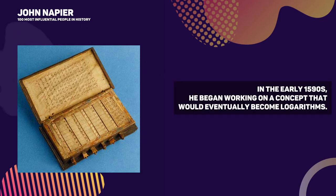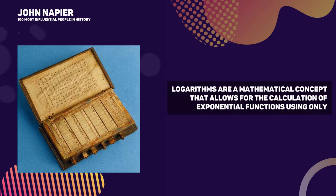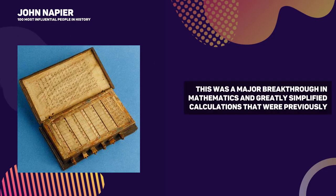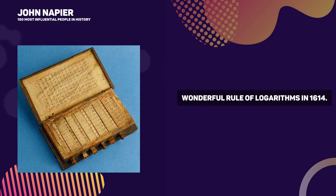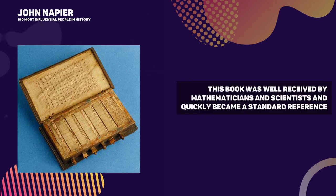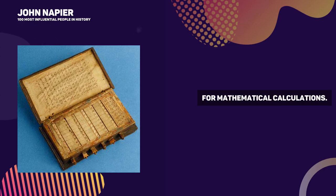In the early 1590s, he began working on a concept that would eventually become logarithms. Logarithms are a mathematical concept that allows for the calculation of exponential functions using only addition and subtraction. This was a major breakthrough in mathematics. Napier published his ideas in a book called Mirifici Logarithmorum Canonis Descriptio, Description of the Wonderful Rule of Logarithms, in 1614, which quickly became a standard reference for mathematical calculations.